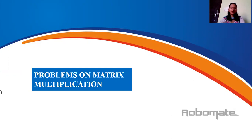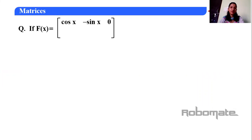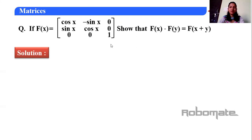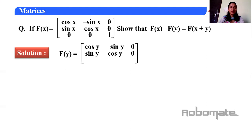Let's start our first question. Here f(x) means a matrix — generally f(x) means function in x. So here f(x) is the matrix: [cos x, -sin x, 0; sin x, cos x, 0; 0, 0, 1]. We have to show that f(x) · f(y) = f(x+y). Here f(y) means if you replace x by y in this matrix, we get the value of f(y). And f(x+y) means x is replaced by x+y.